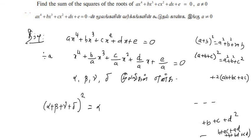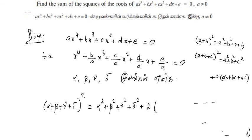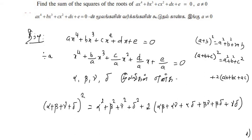So (alpha plus beta plus gamma plus delta)² equals alpha² plus beta² plus gamma² plus delta² plus 2(alpha·beta plus alpha·gamma plus alpha·delta plus beta·gamma plus beta·delta plus gamma·delta).